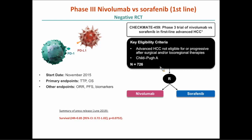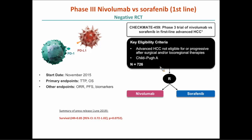The nivolumab versus sorafenib frontline trial enrolled 726 patients. A recent press release from Bristol announced the trial was negative: hazard ratio 0.85, 95% confidence interval crossing 1, p-value 0.075. This data is expected to be presented at ESMO.